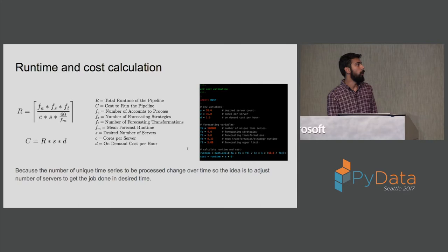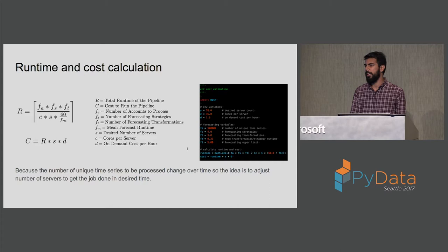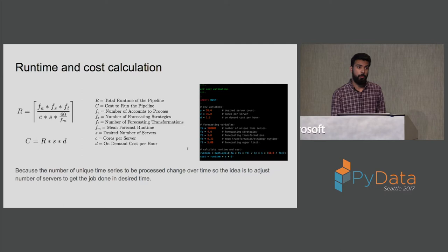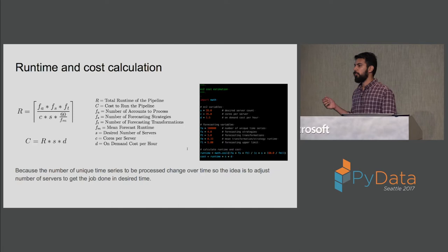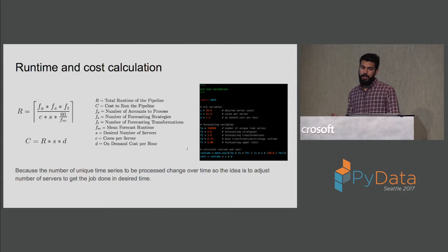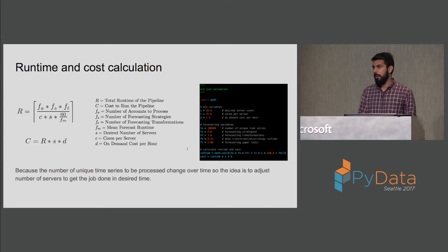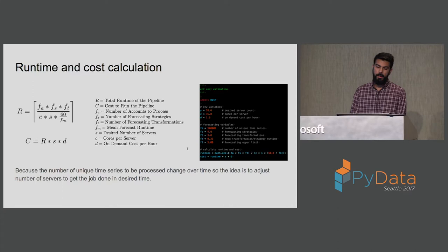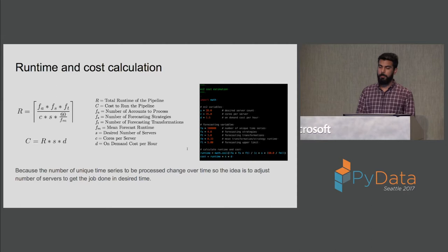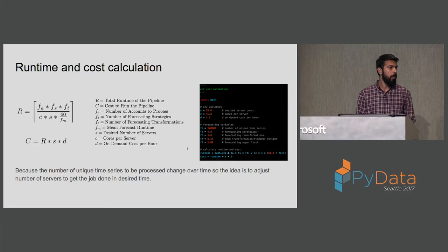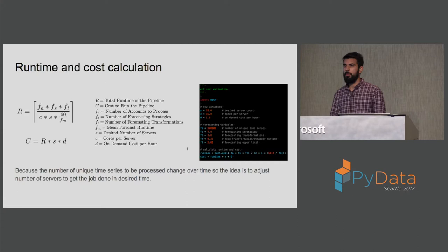These are some simple formulas we use to estimate the runtime and cost for every pipeline run, used to tweak variables. Right now we have the number of servers as the main variable — to reduce runtime, we can bump up the number of servers. To calculate runtime: in the numerator we have number of unique accounts multiplied by the number of strategies, multiplied by the number of transformations, divided by the number of servers multiplied by cores per server, multiplied by the mean forecasting time per unique time series. Cost is then just runtime multiplied by number of servers multiplied by cost per server.